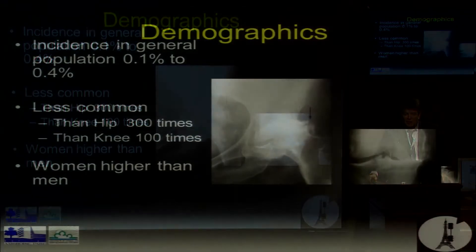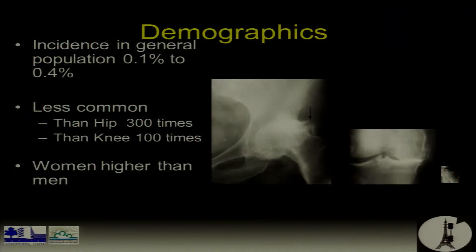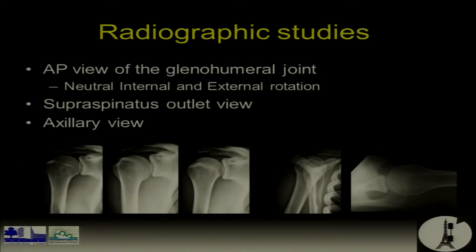Still, this incidence is quite low compared to the hip and the knee, and it's more women than men. The diagnosis is made with X-rays — with arthritis, the best exam remains plain X-rays. It's very dangerous to make the diagnosis of arthritis with MRI. The best exam is X-rays with the AP view in external rotation, internal rotation, and neutral rotation, with the outlet view and the axillary view.